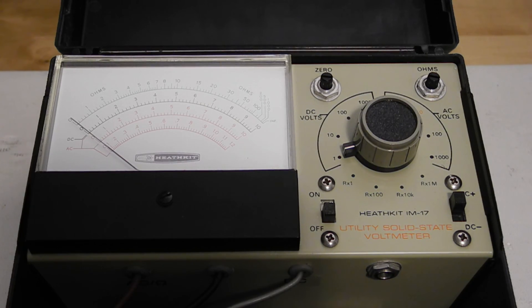The range switch selects the function one of four DC voltage ranges, four AC voltage ranges, or four resistance ranges.